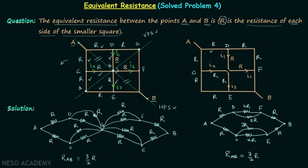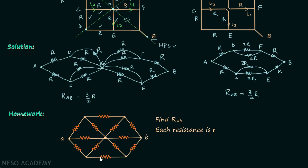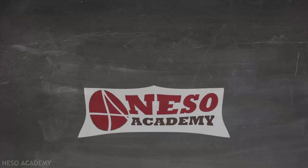Now I will give you one homework problem. In this network you are required to calculate the equivalent resistance between points A and B, where each resistor has the value small r. Try to solve this problem and once you have your answer, post it in the comment section.